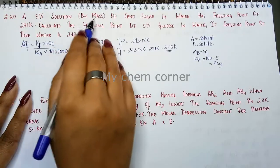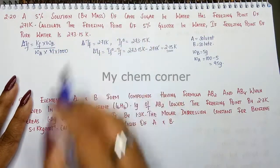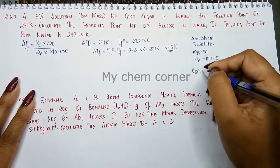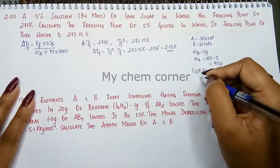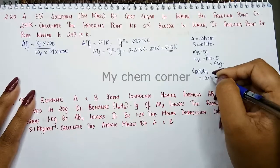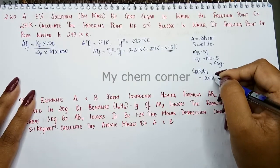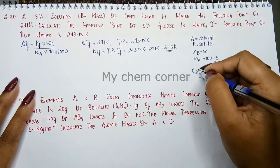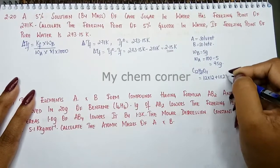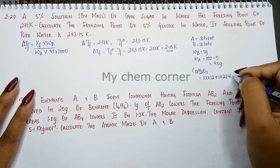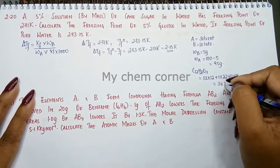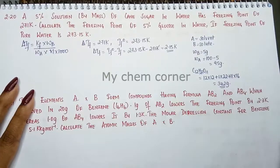We also need to calculate what is the molar mass of the cane sugar. Cane sugar formula is going to be C12H22O11. Now this is going to be 12 into 12, because 12 atoms into atomic mass of carbon which is 12, plus 1 into 22, plus 11 into 16. When we simplify this, you will get 342 grams.